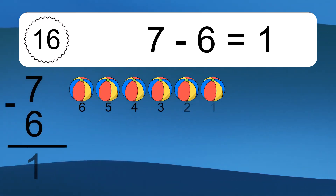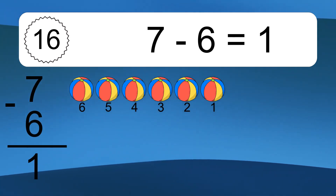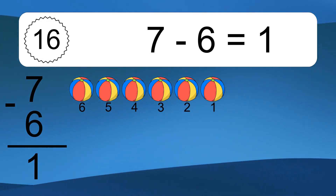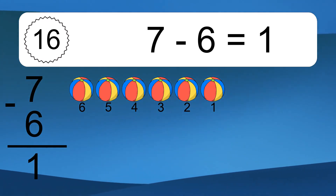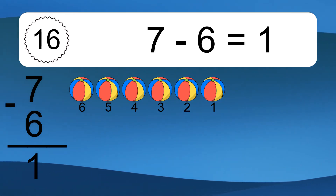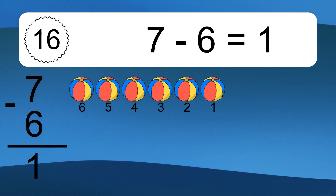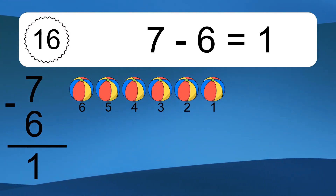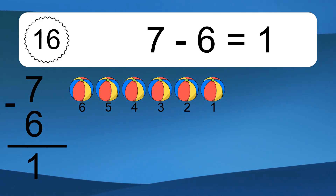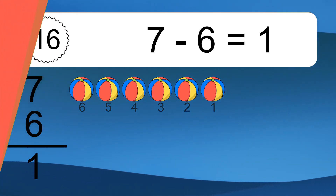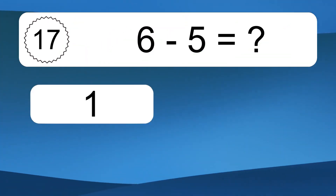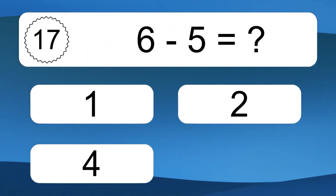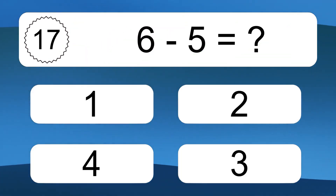7 minus 6 equals what? 7 minus 6 equals 1. Let's count it. 6, 5, 4, 3, 2, 1.